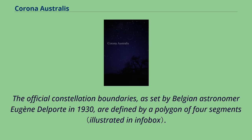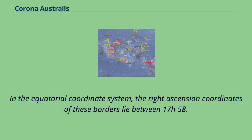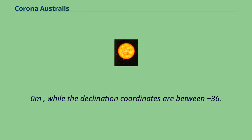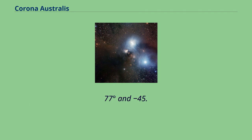The official constellation boundaries, as set by Belgian astronomer Eugène Delport in 1930, are defined by a polygon of four segments. In the equatorial coordinate system, the right ascension coordinates of these borders lie between 17 hours 58.3 minutes and 19 hours 19.0 minutes, while the declination coordinates are between minus 36.77 degrees and minus 45.52 degrees.